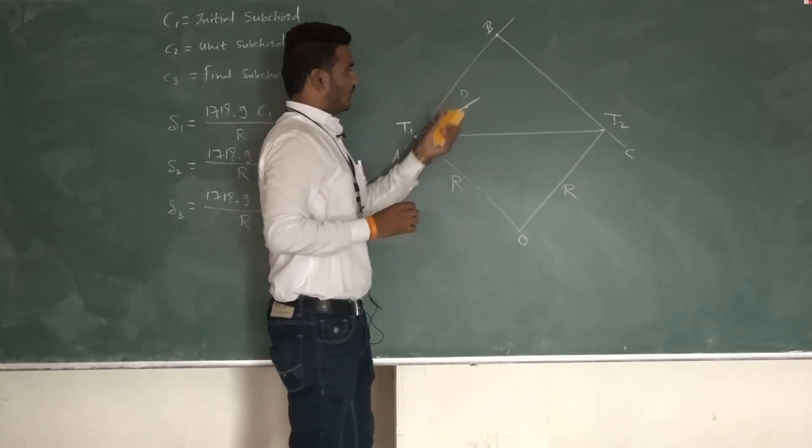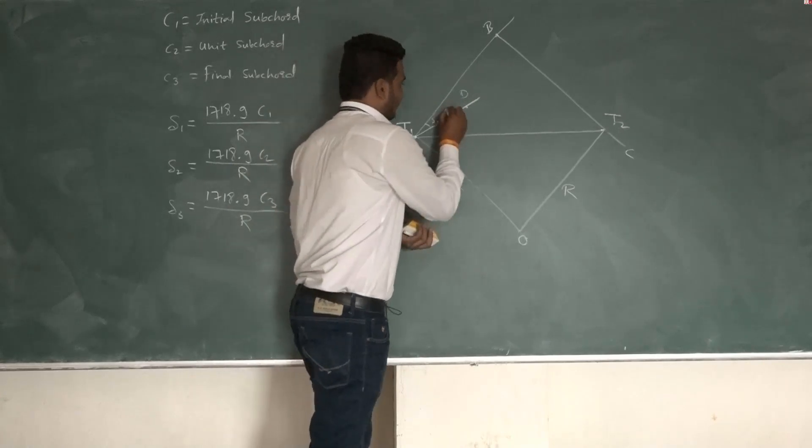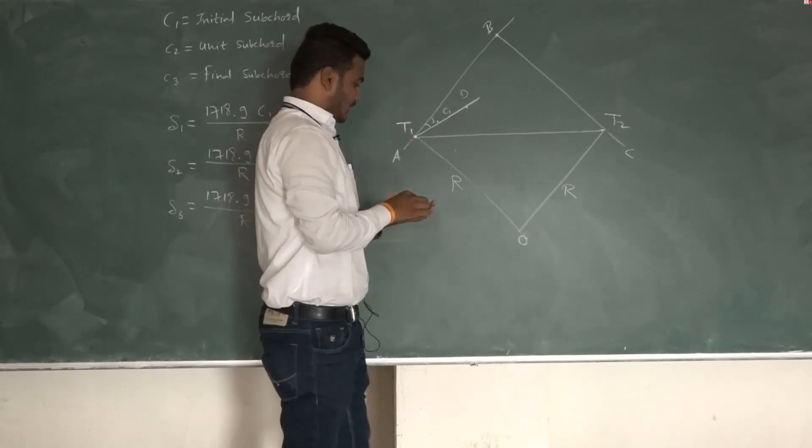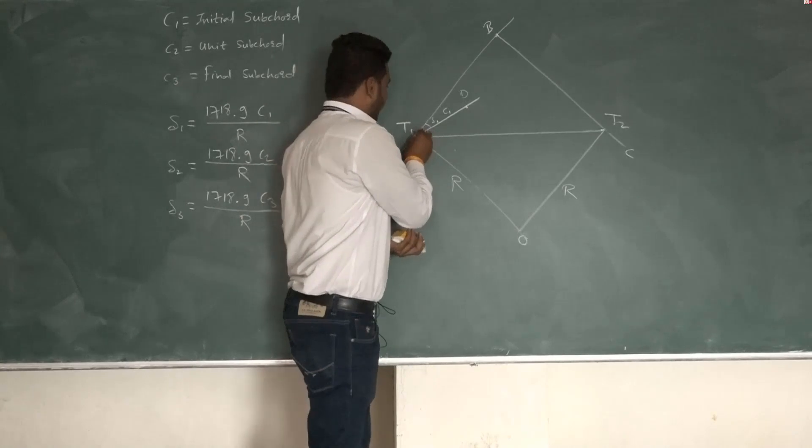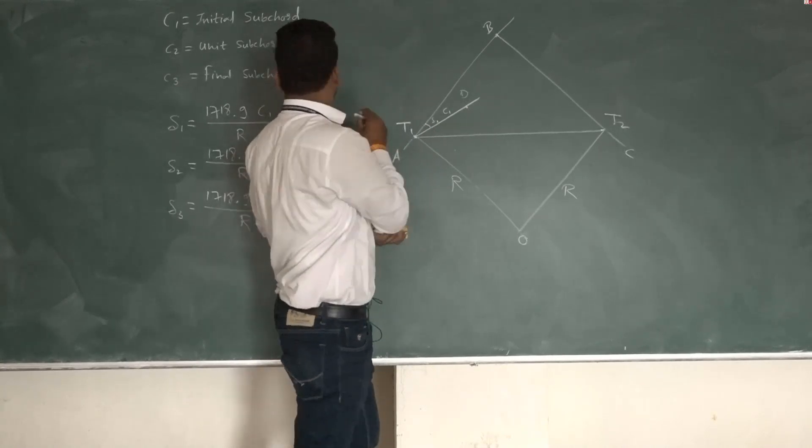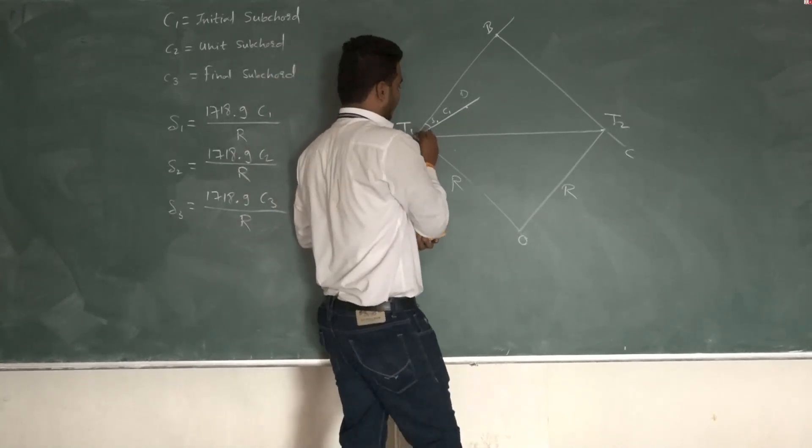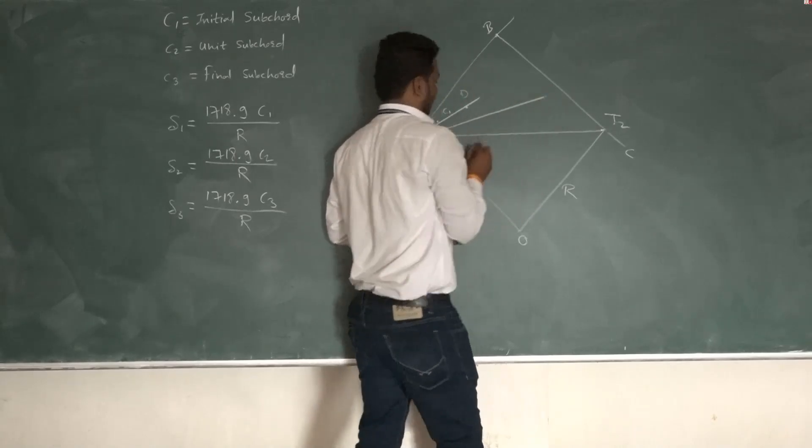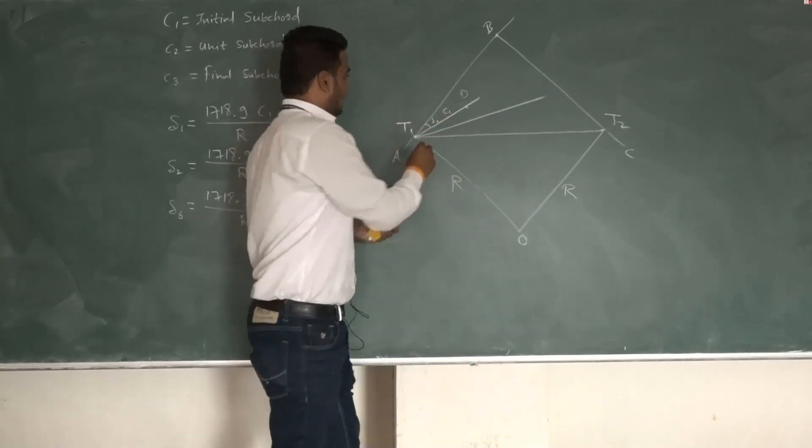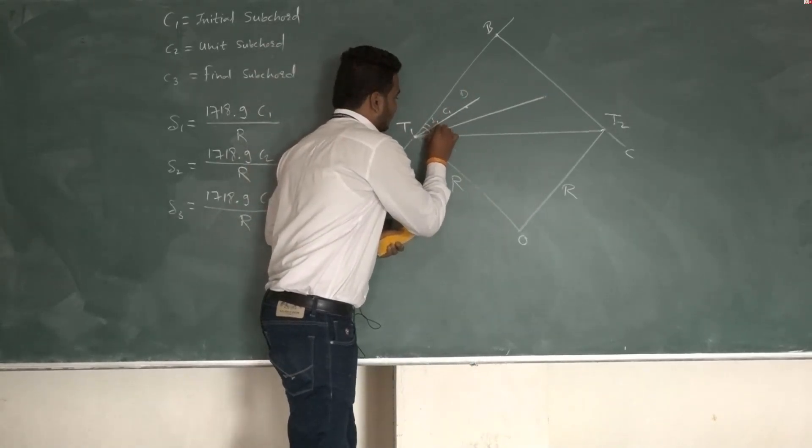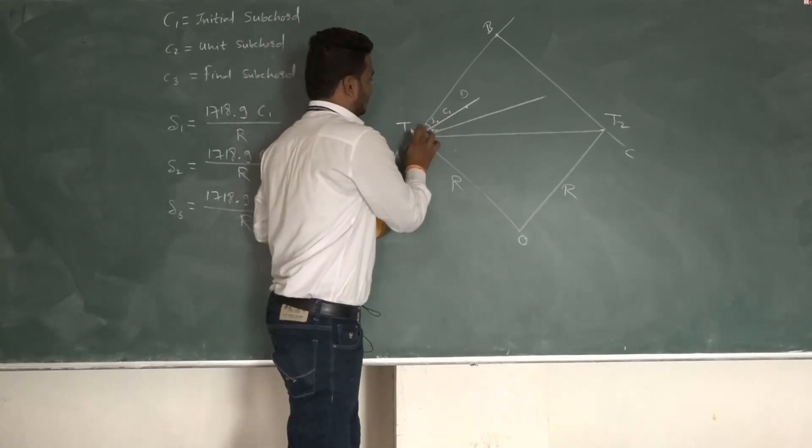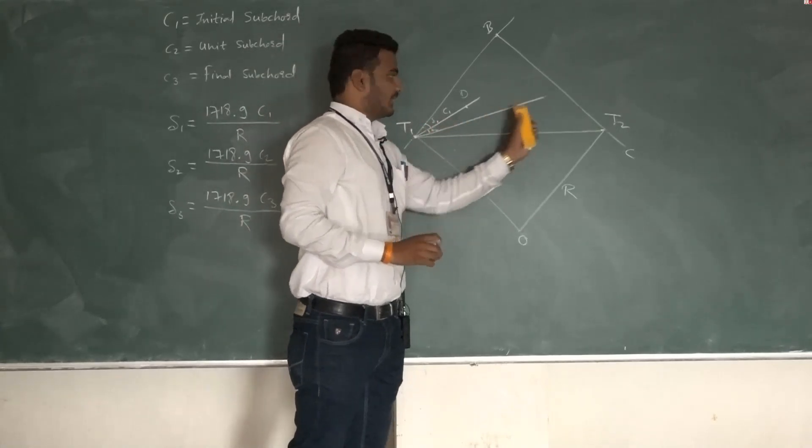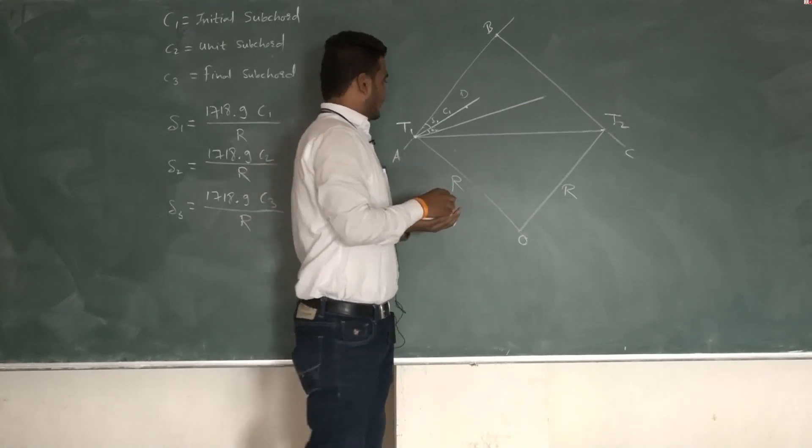Suppose I have taken point D at a distance of C1, then from station point T1 take next angle delta 2 and draw a line at angle delta 2.